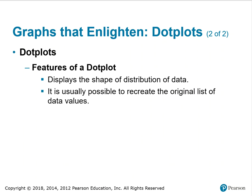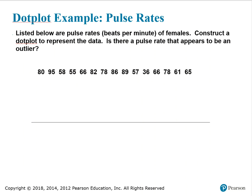The features of a dot plot: it displays the shape of the distribution of data, and it is usually possible to recreate the original list of data values. Let's draw a dot plot for pulse rates. Listed below are pulse rates in beats per minute of females. Construct a dot plot to represent the data. Is there a pulse rate that appears to be an outlier?